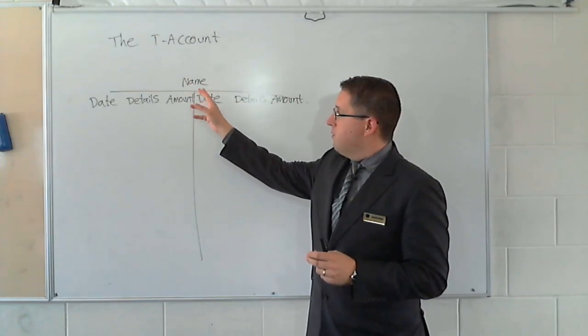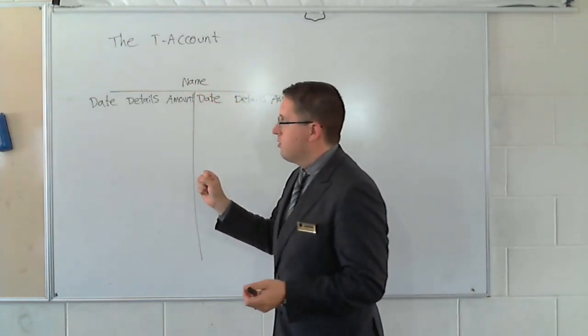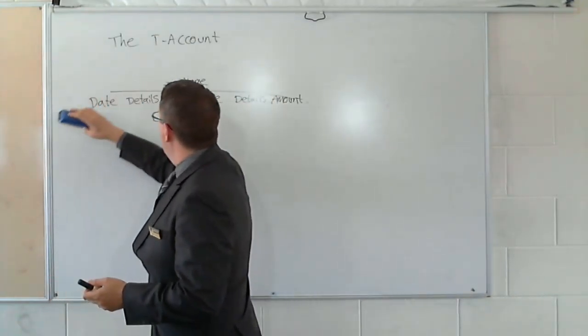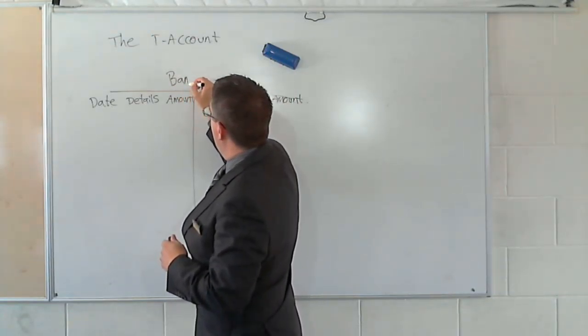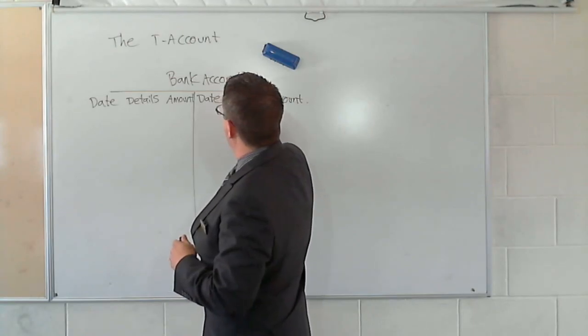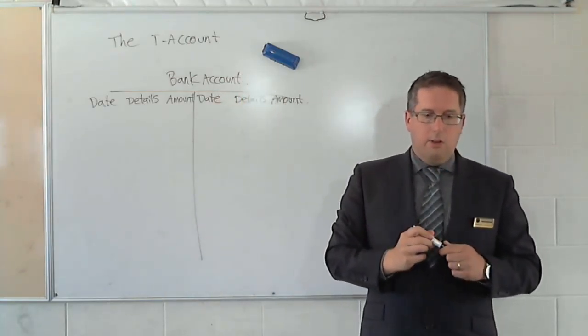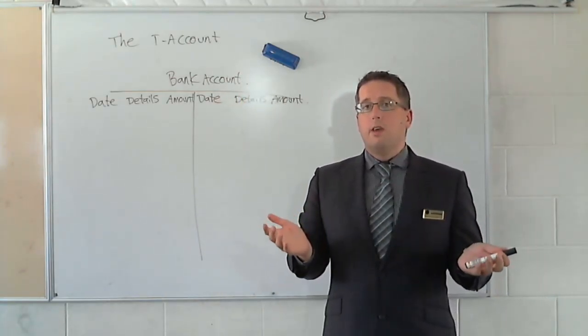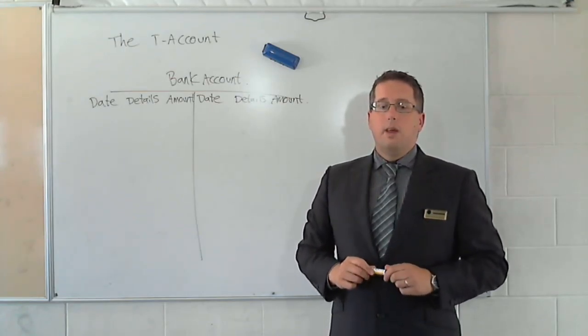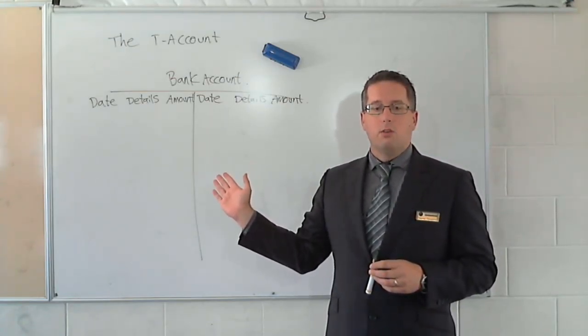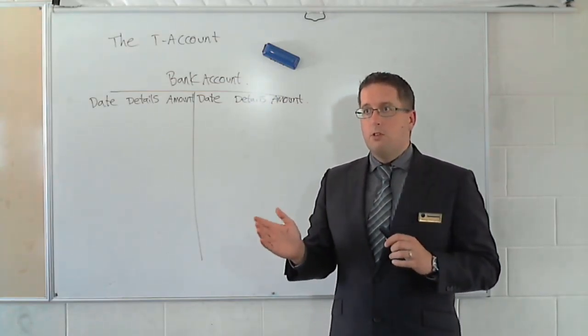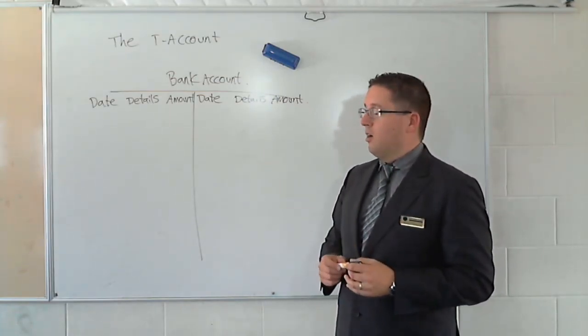So, we've got at the very top a name of the account. So, this might be, let's call it something useful. This is the bank account. So, this would be the T-account for the bank account. Now, every account would have its own individual T-account. Each individual account would have its own T-account.